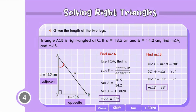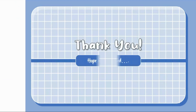Remember that in solving right triangles, given at least one acute angle and two sides: to find the measure of any acute angle, use trigonometric ratios with the given sides of the right triangle. To find the length of any side, you may use trigonometric ratios or the Pythagorean theorem. Thank you for watching — hope you learned something today.